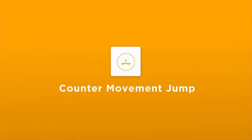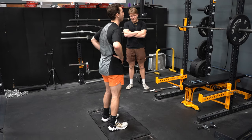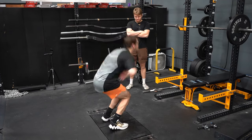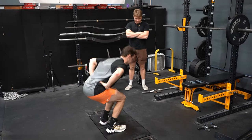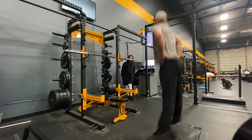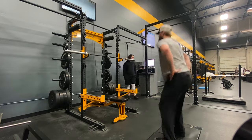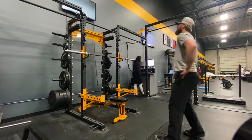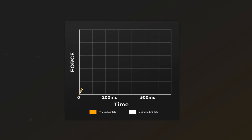The first test we'll do on the force plates is the counter movement jump. The counter movement jump is a dynamic movement that allows us to measure the athlete's current rate of force development — which is how much force they can produce in a short window of time.